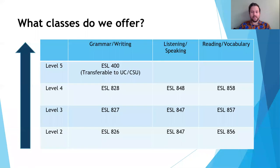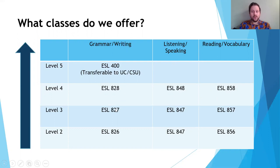Here is a chart showing the classes and levels that we offer. Most of our classes range from level 2 to level 5, from low intermediate to high intermediate to low advanced and high advanced. We offer classes in grammar and writing, listening and speaking, and reading and vocabulary. These skills are taught together in the same class, so your schedule is flexible and the skills you choose are up to you.